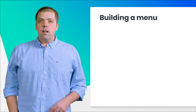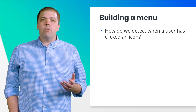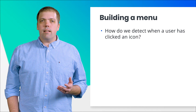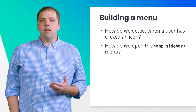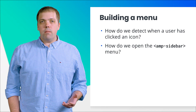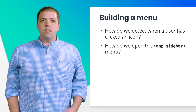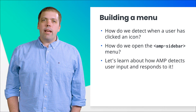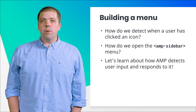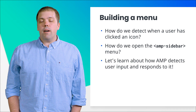Some questions still remain, such as: how do we detect when a user has clicked an icon? Or, how do we open and close the AMP sidebar? To find our answers, let's learn how AMP detects user input and how we respond to it.